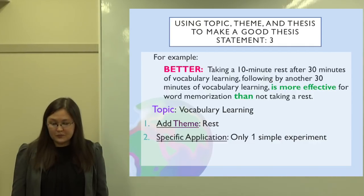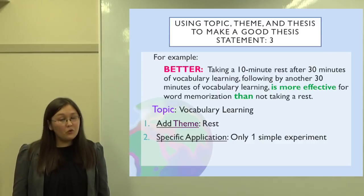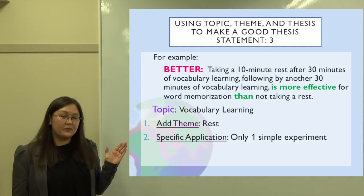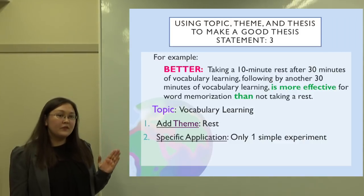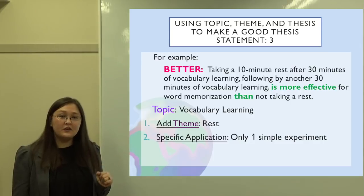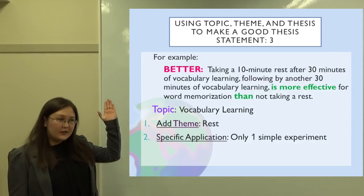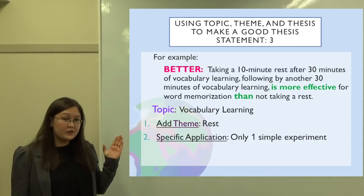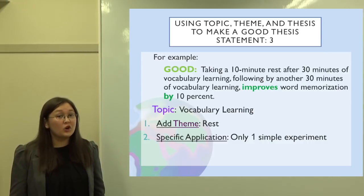Here's an improved version: 'Taking a 10-minute rest after 30 minutes of vocabulary learning, followed by another 30 minutes of vocabulary learning, is more effective for memorization than no rest.' Now I can see what it's effective for — memorization — and the author is taking a side. It's more effective than no rest. But still, it's not very concrete. It's good in terms of opinion and taking a side, but how can we test this? We need to test something more concrete.